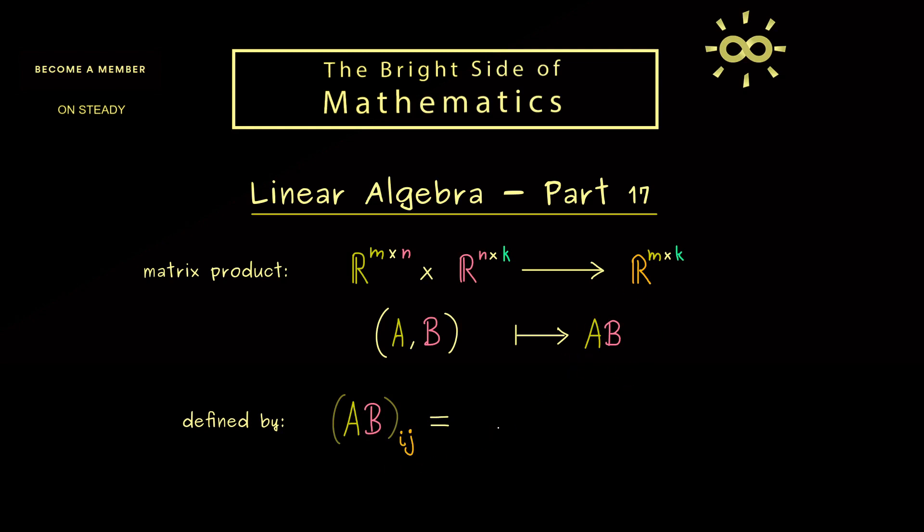However, from the last video we already know it's given by a standard inner product. For this we can simply use the entries of A which we denote by lowercase a and the entries of B. And of course they are denoted as well with lowercase b.